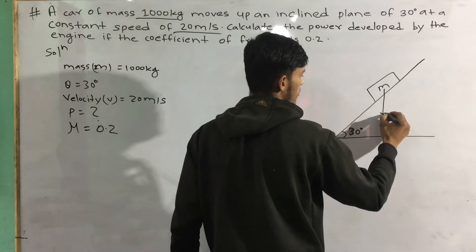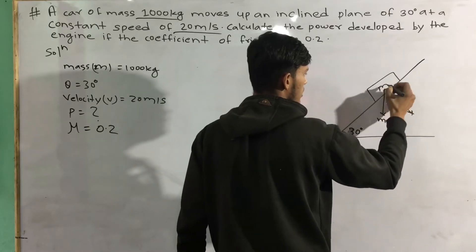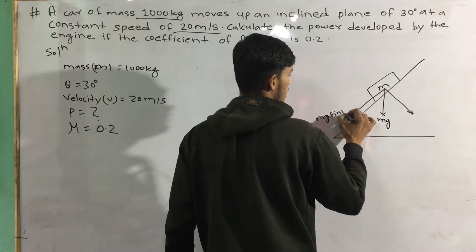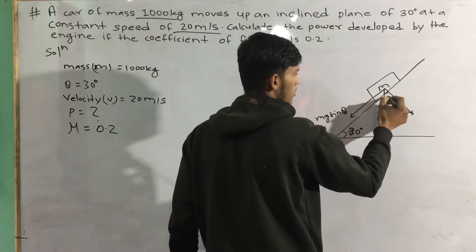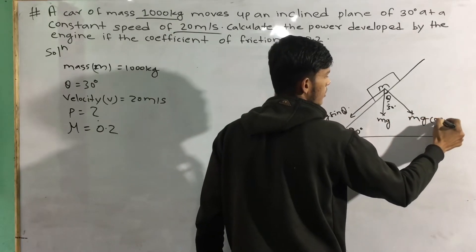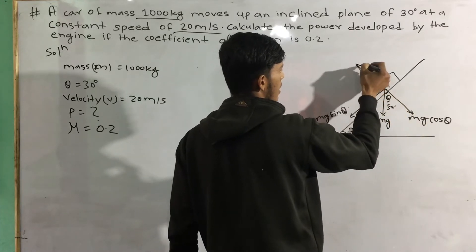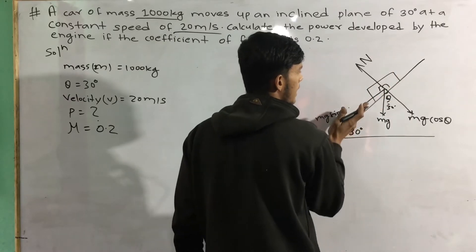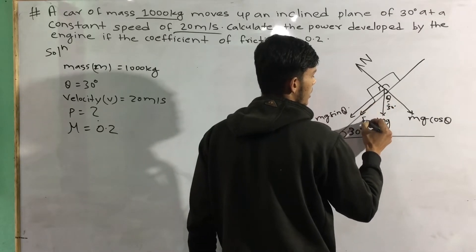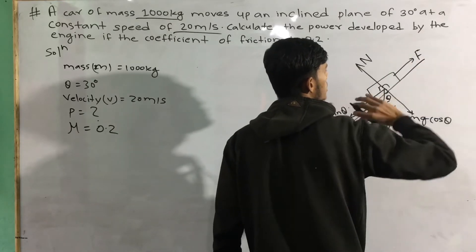The inclined plane is 30 degrees. Mg sin theta acts along the plane. The normal reaction is Mg cos theta. The friction force acts in the same direction as Mg sin theta, opposing motion.